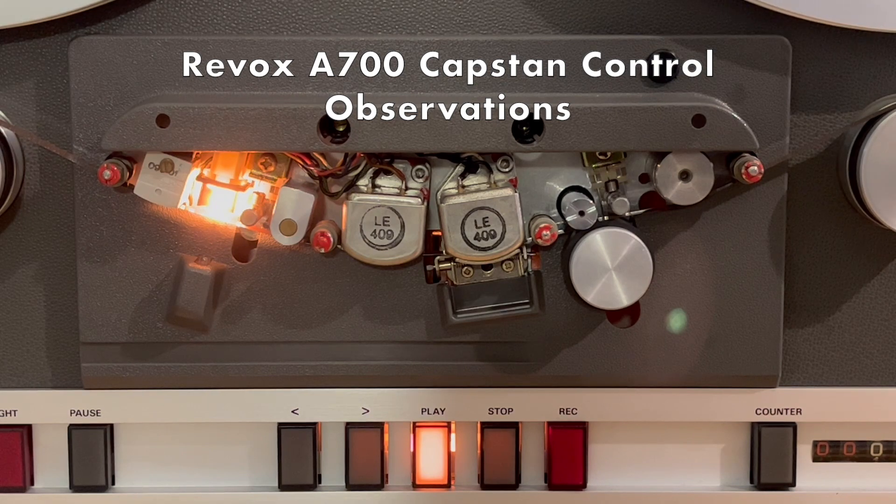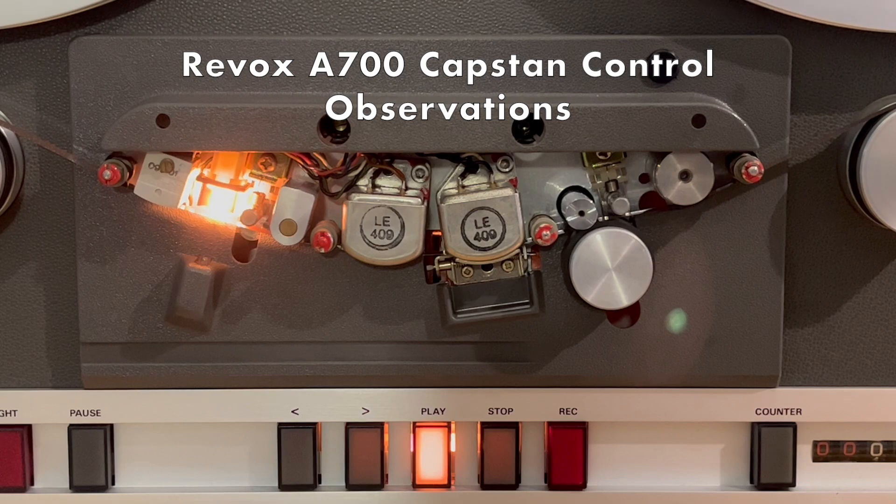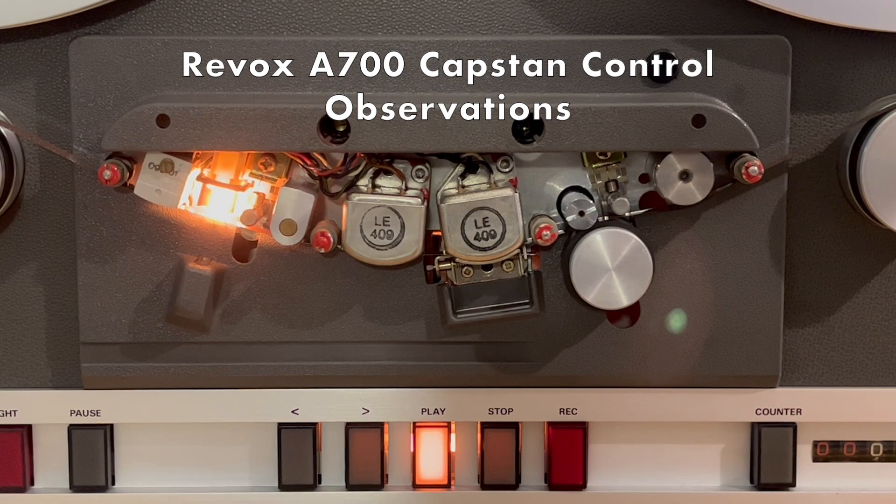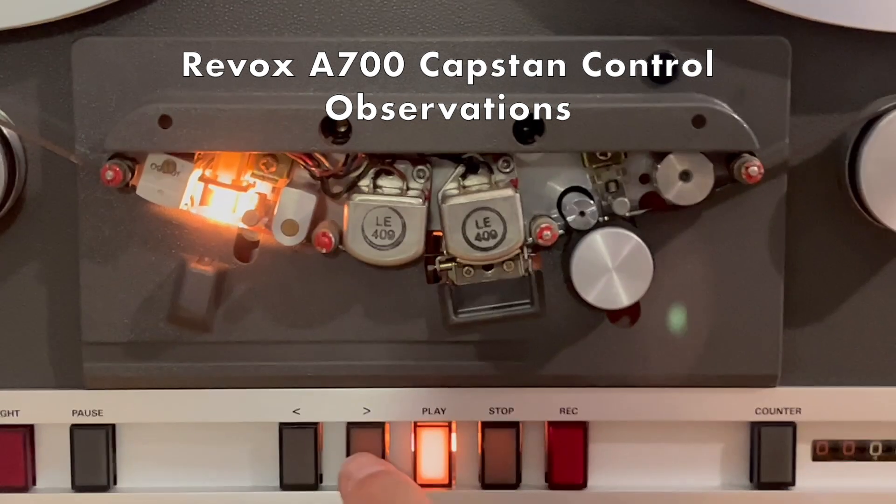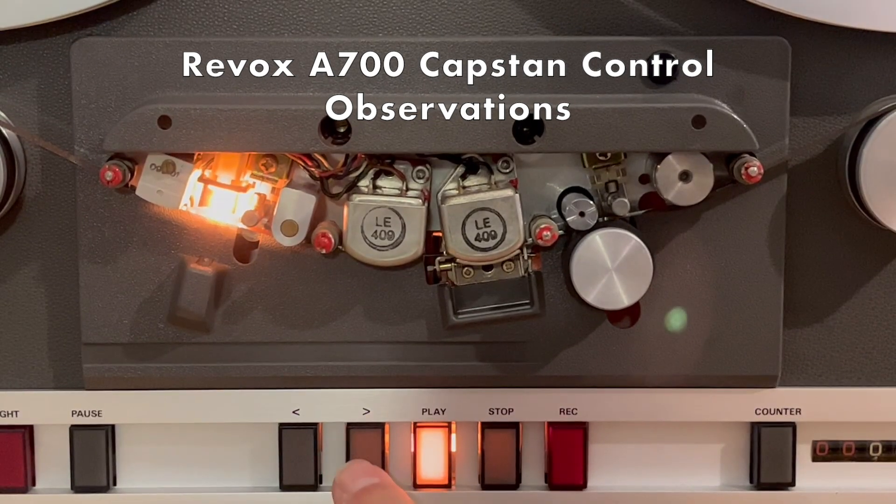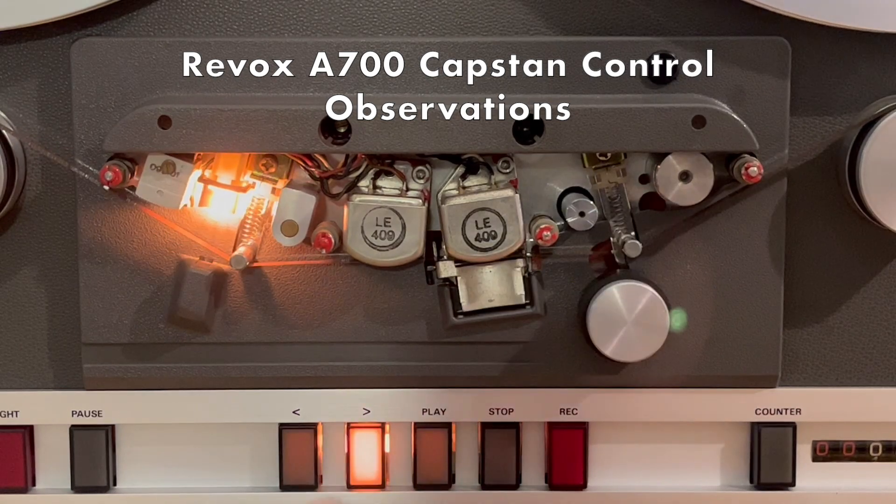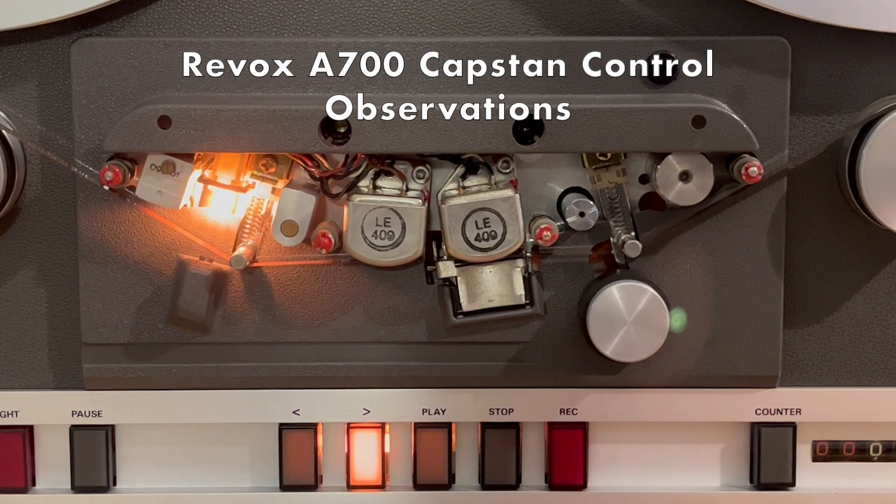For example, at 15 inches per second, the flutter specification is plus or minus 0.06%. The time between tachometer rising edges is 625 microseconds. 0.06% of that is about one-third of one microsecond.